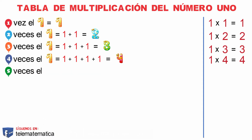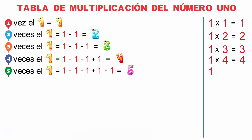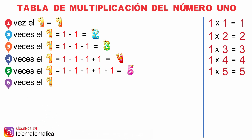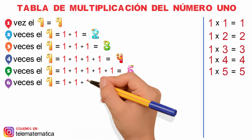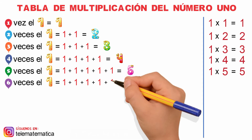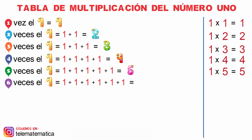5 veces el 1 es igual a 1 más 1 más 1 más 1 más 1 es igual a 5. Y escrito como una multiplicación sería 1 por 5 es igual a 5. 6 veces el 1 es igual a 1 más 1 más 1 más 1 más 1 más 1 es igual a 6. Y escrito como una multiplicación sería 1 por 6 es igual a 6.